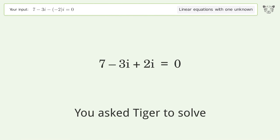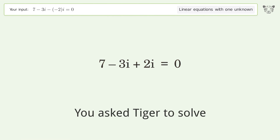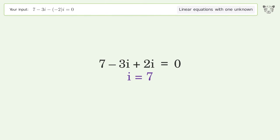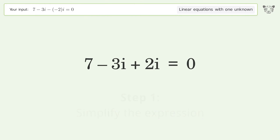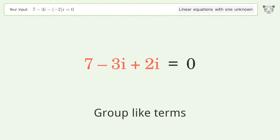You asked Tiger to solve this — it deals with linear equations with one unknown. The final result is i equals 7. Let's solve it step by step: simplify the expression and group like terms.